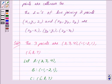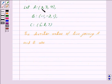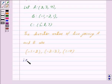Now by key idea, we know that the direction ratios are (x₂ - x₁, y₂ - y₁, z₂ - z₁). So the direction ratios of line joining A and B are (-1 - 2, -2 - 3, 1 - 4). So that is we have (-3, -5, -3). We mark this as equation 1.